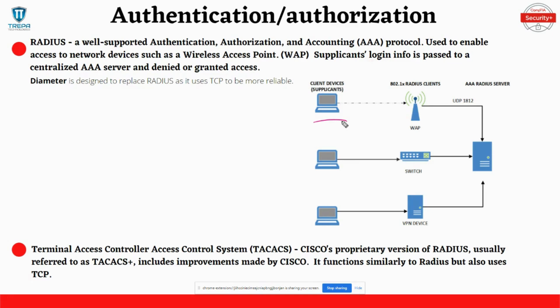TACACS is a AAA protocol similar to RADIUS, but it is Cisco proprietary. It uses TCP for connections instead of UDP, which is what RADIUS uses, and it will actually encrypt the entire payload, where RADIUS will only encrypt the password.